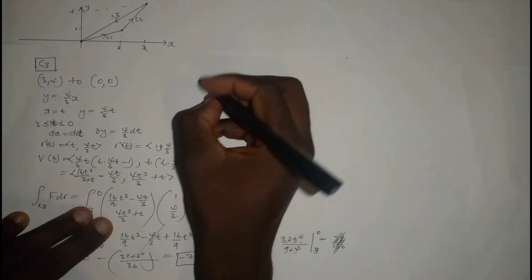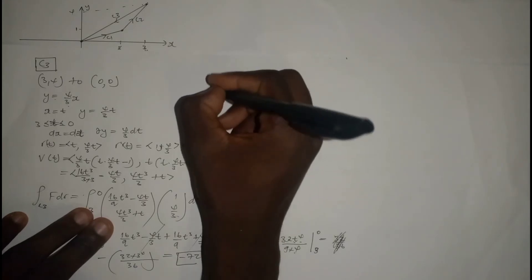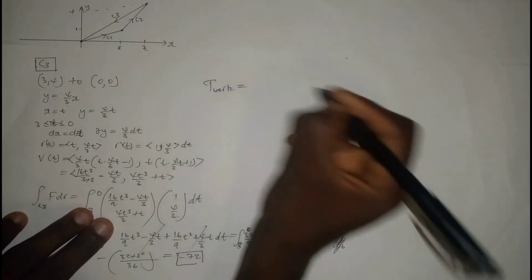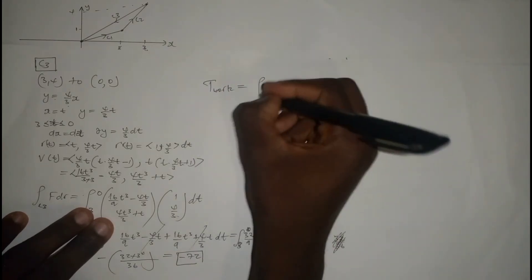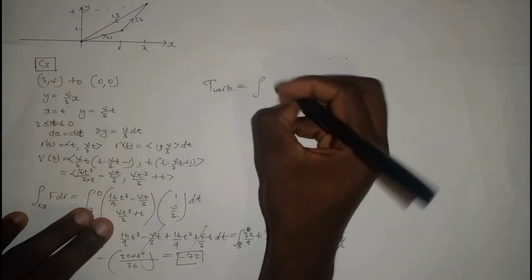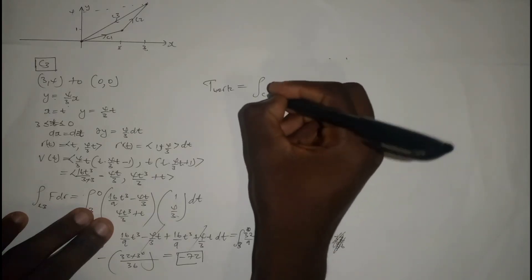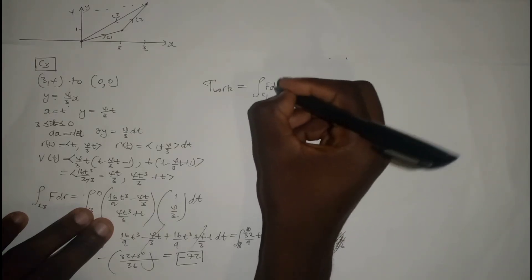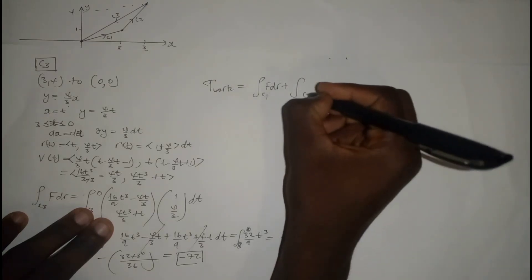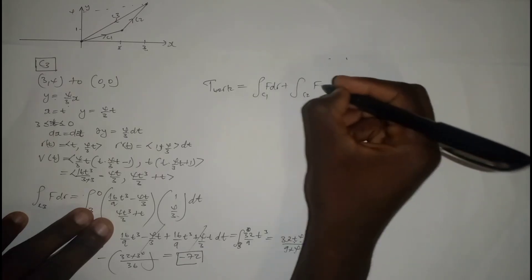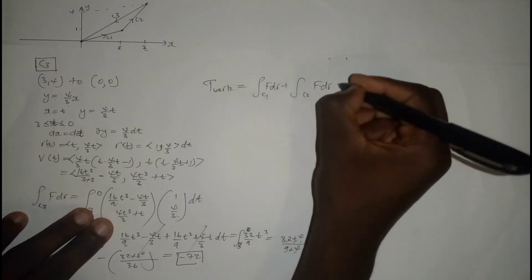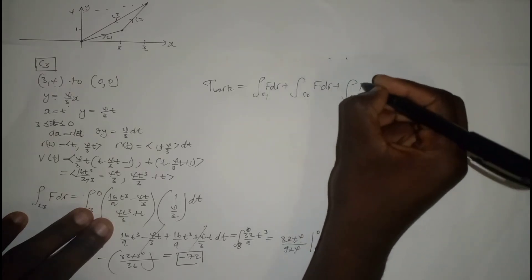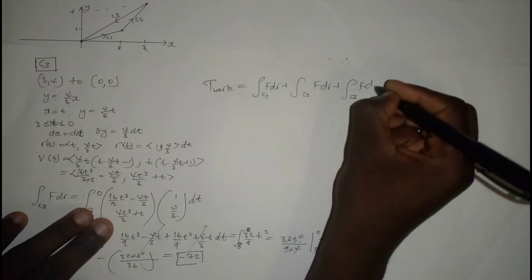To find the total work done: W = ∫C1 F·dR + ∫C2 F·dR + ∫C3 F·dR = 2 + 75 + (−72) = 5.